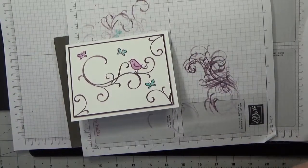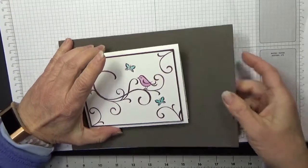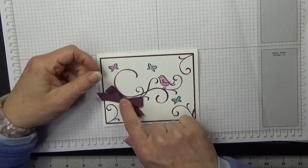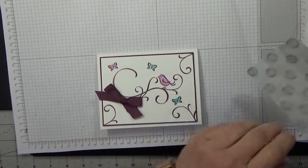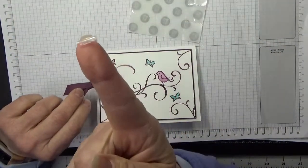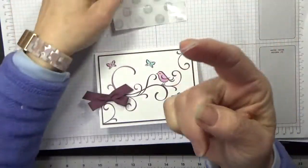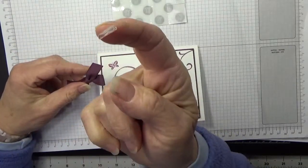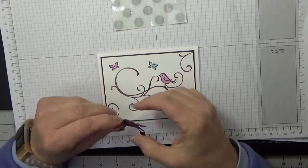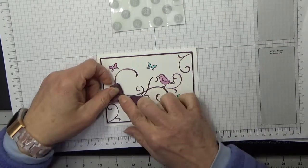To finish off our card, I have a bow that I'm going to put right here. I just took my glue dot and rolled it into a roll here, and I'm just going to put it on the back of my bow. I already had this bow made so that you didn't have to sit and watch me fiddle with it.